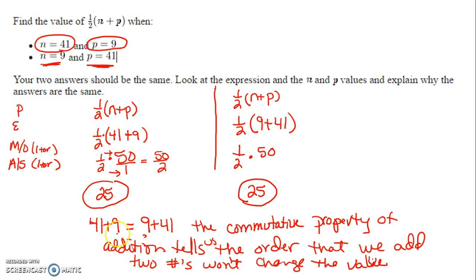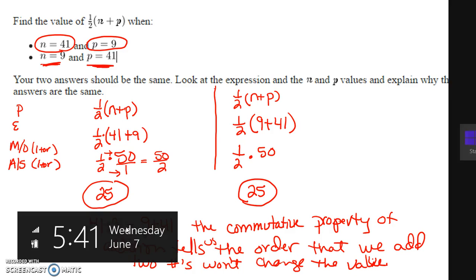Either way, we still come up with 50. So based on the commutative property of addition, we knew these expressions would be the same value because all we did was take the 41 plus 9 and switch it around to make it 9 plus 41. I hope that helps.